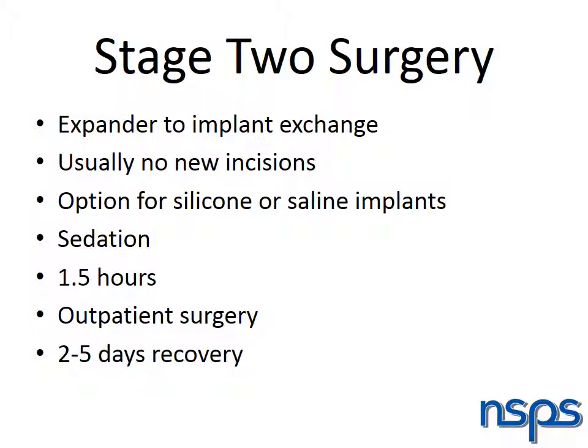During the stage two surgery, your expander is removed and the permanent implant of your choice is placed. This is usually accomplished through your previous mastectomy incision. Your permanent implant may be silicone or saline depending on your preferences. Pros and cons of the different types of implants will be discussed prior to your surgery. Stage two surgery is an outpatient surgery, takes approximately one to one and a half hours, and is usually done under sedation. Most patients feel they are ready to return to work within two to five days.